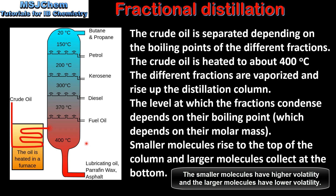Here we have a diagram of a distillation column. The crude oil is heated to about 400 degrees C and the different levels at which the fractions condense depends on their boiling points. Smaller molecules with their lower boiling points rise to the top of the column, and larger molecules such as lubricating oil with its higher boiling point collect at the bottom.